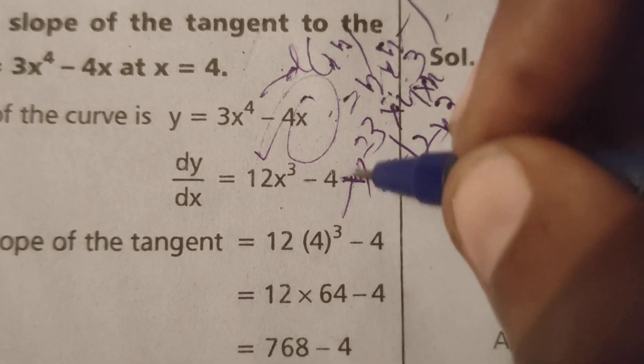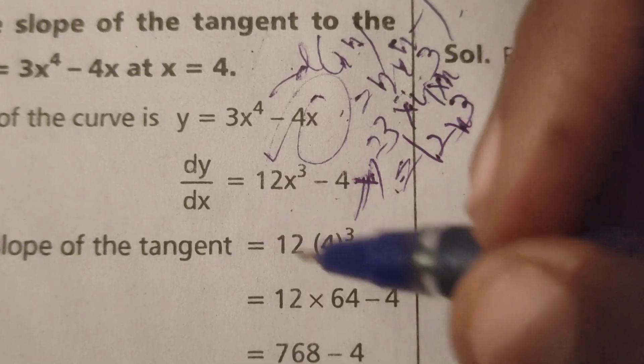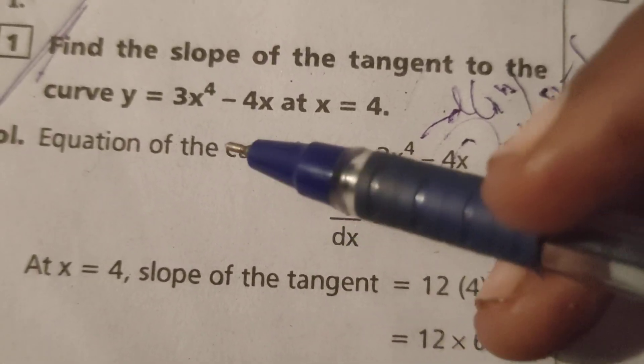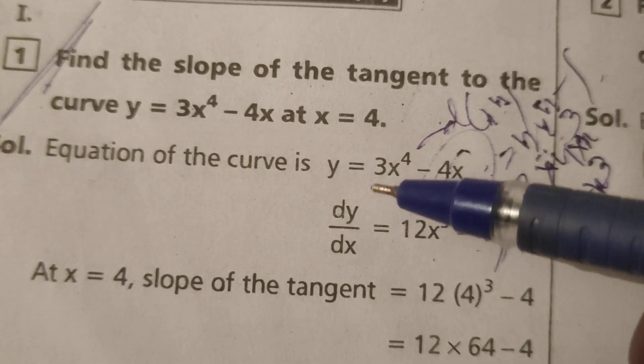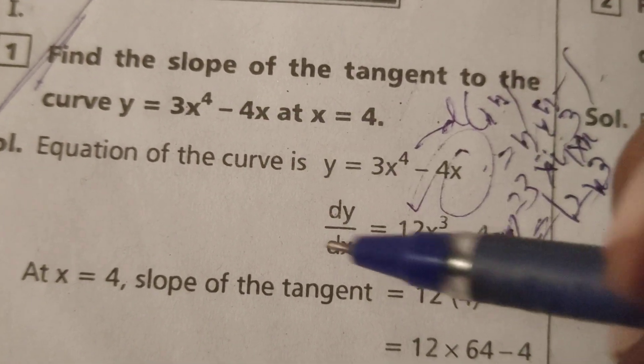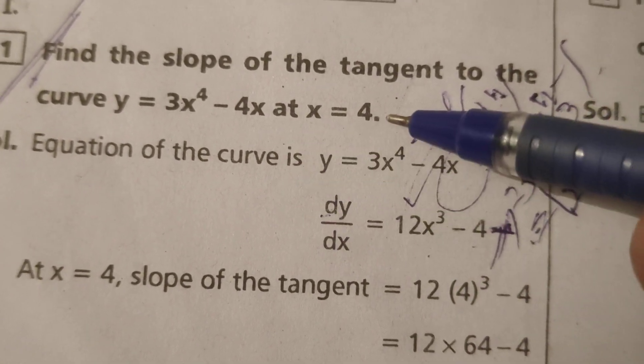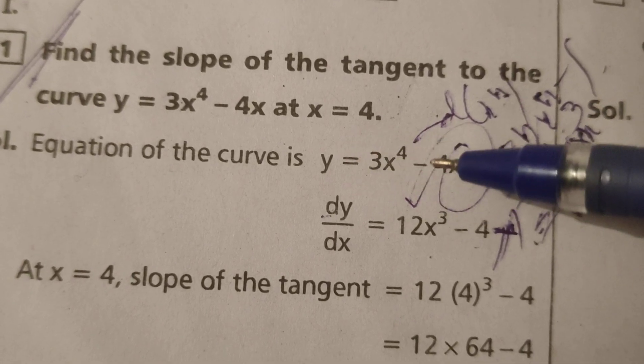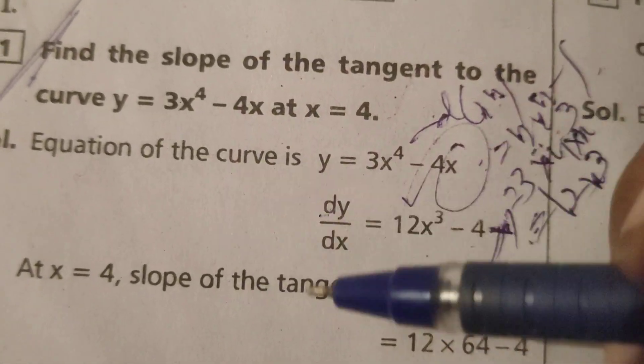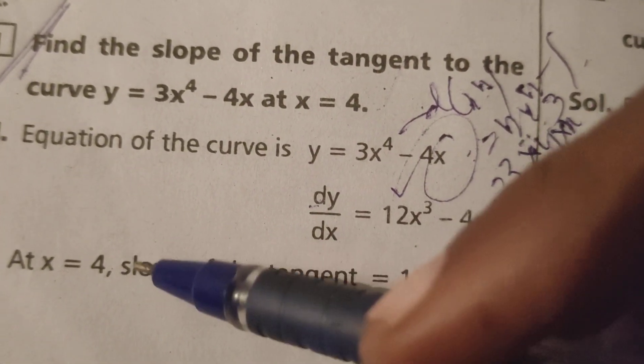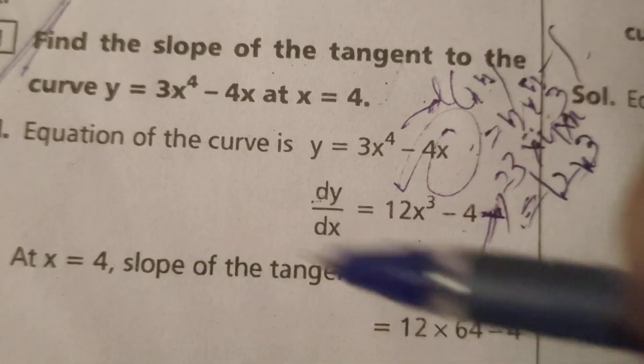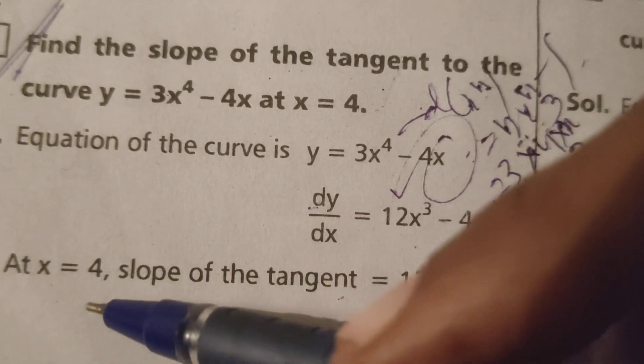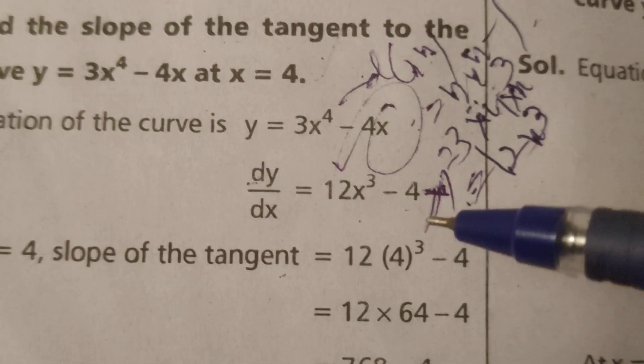Next step, for the given equation of the curve, we find the tangent slope at x equals 4. The slope of the tangent at x equals 4.